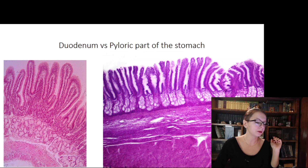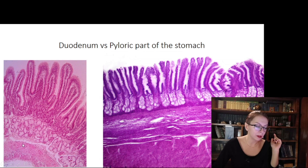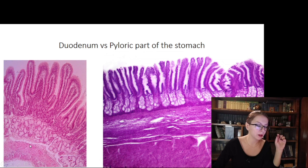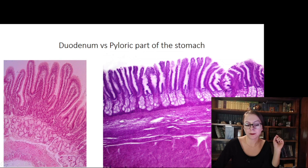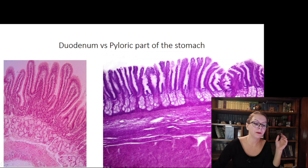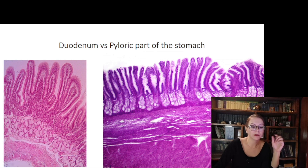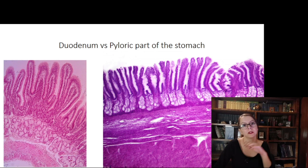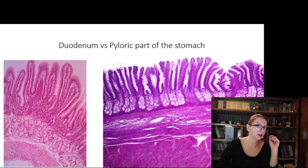The first criterion is the thickness of the muscularis. In the duodenum you may see two layers, and the total thickness of the muscularis is much less than the thickness of all other layers. If we look at the pyloric part, the muscularis is very thick because it is very close to the sphincter region, and the thickness of the mucosa is much less than the thickness of all other layers. So the relative thickness of the muscularis is the first criterion.